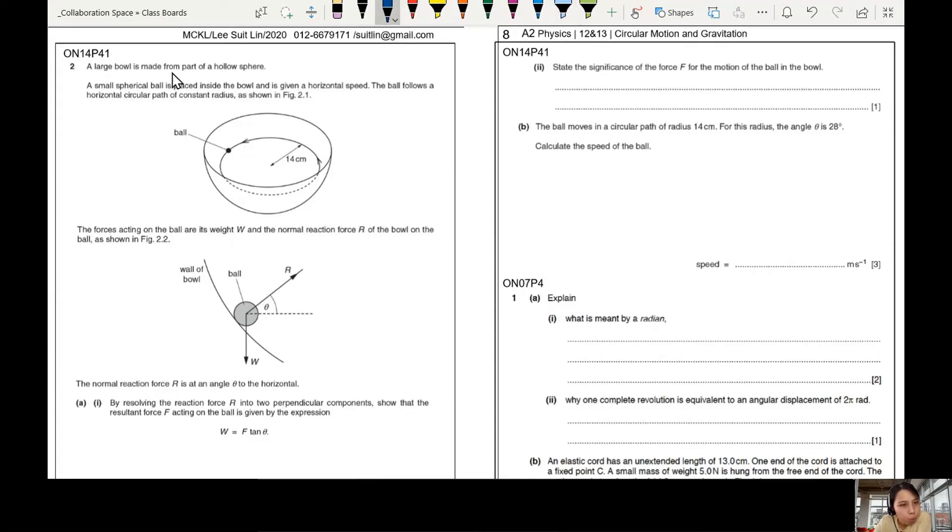A large bowl from a hollow sphere, you know, bowl you eat your ramen, you drink your soup. A small spherical ball is placed inside the bowl and it's going round and round and round at a horizontal speed.